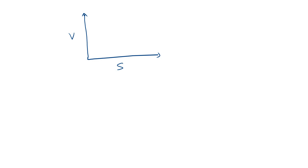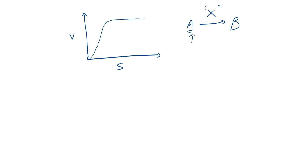For any particular reaction, as the substrate concentration increases, the speed of the reaction will initially increase. Consider a reaction where substrate A is converted to product B, catalyzed by enzyme X. As you keep increasing the substrate concentration, the speed of the reaction keeps increasing — but only up to a certain point.